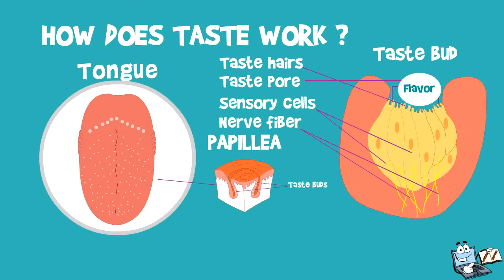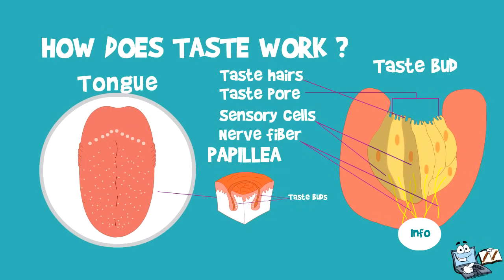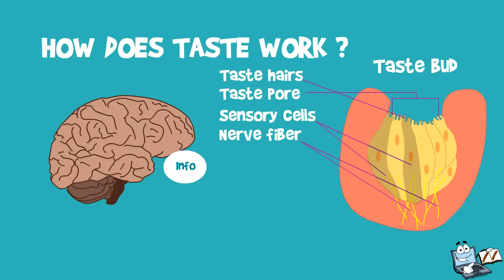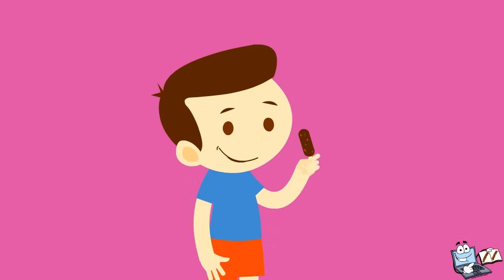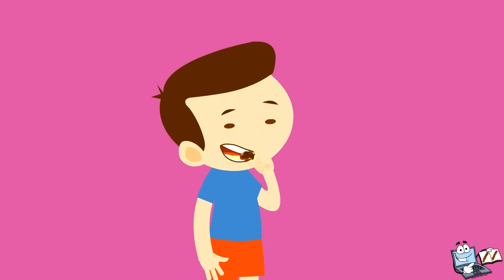A flavor enters in the taste pore, and sensory cells analyze the flavor and send the information about it to the nerve fibers. They send the details to the brain. And thus, we know the flavor that we tasted. Now you know how you come to know the flavor of your favorite ice cream. Seems like you're having fun learning this.